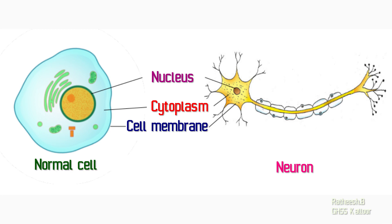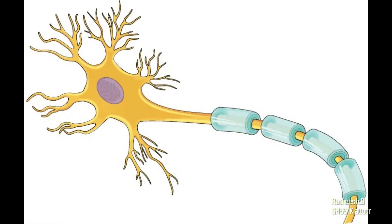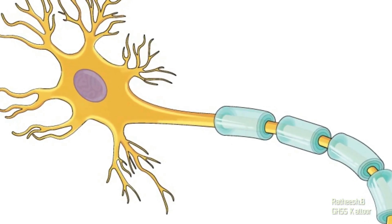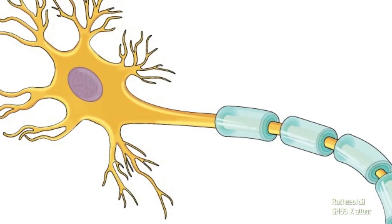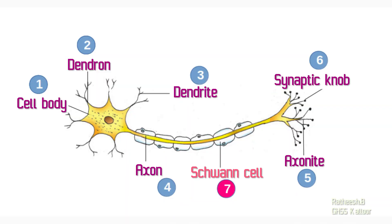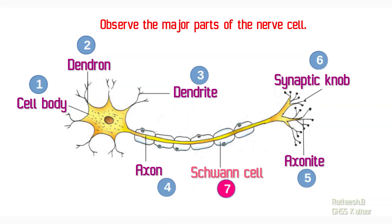Similarly, can you identify the differences between the animal cell and the nerve cell or neuron? By observing this picture, neurons have certain projections while comparing with other cells. Let us discuss the detailed structure of a neuron. This illustration shows the parts of a neuron.